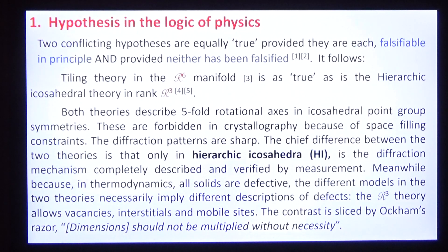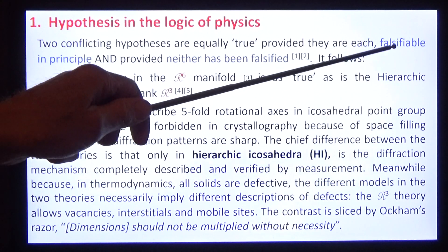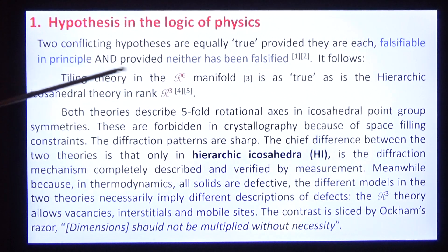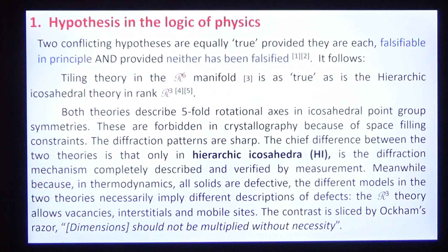First, logic. In the logic of physics, two hypotheses, R6 and R3, are equally true, logically true, provided two things: each is falsifiable in principle and neither has been falsified.